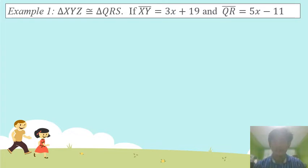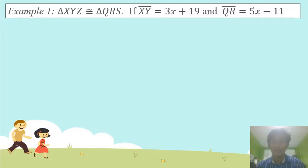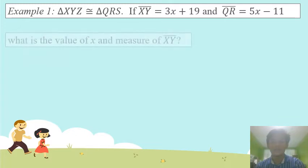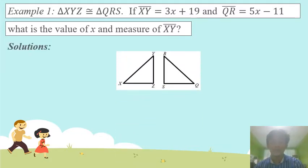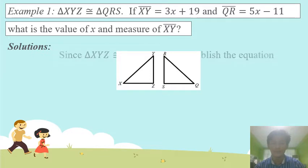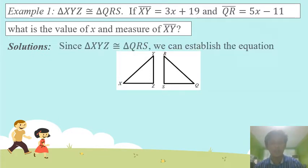Example number one. Triangle XYZ is congruent to triangle QRS. If segment XY is equal to 3X plus 19 and segment QR is equal to 5X minus 11, what is the value of X and the measure of segment XY? As you can see in the given figure, triangle XYZ and triangle QRS are congruent.